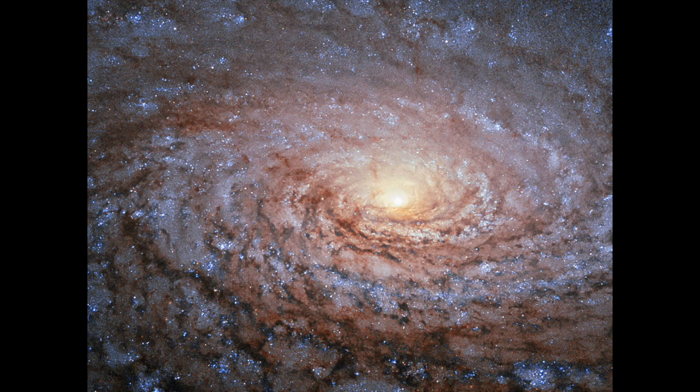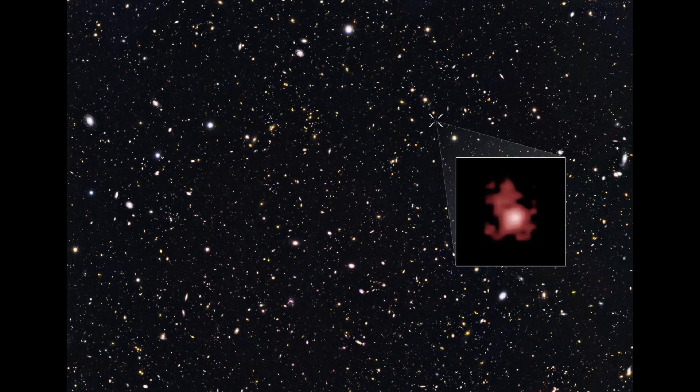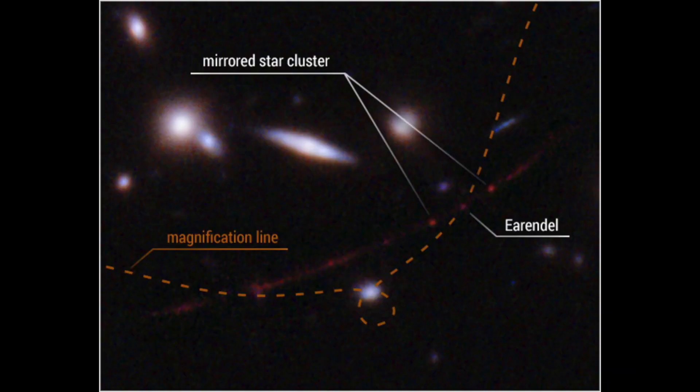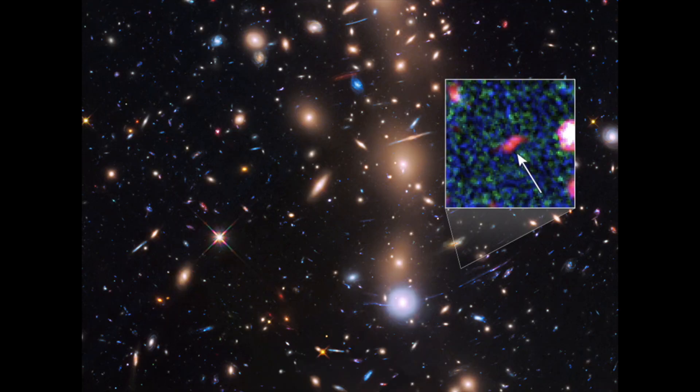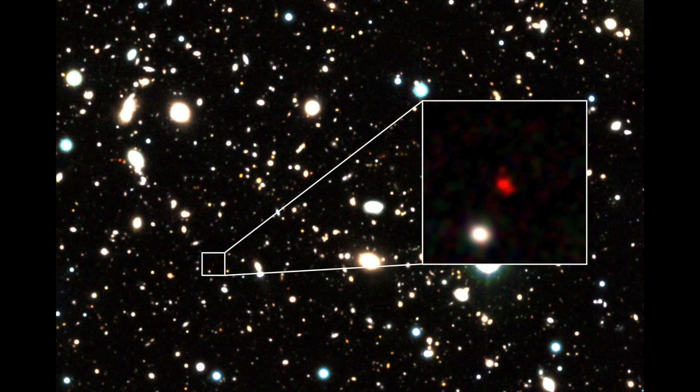According to estimates, the distance to the furthermost observable objects today equals approximately 46 billion light years. The furthermost stellar system concerning the Earth is a galaxy dubbed GN-z11. Its light has been traveling to us for about 13.4 billion years, meaning that this object was formed less than 400 million years after the Big Bang.